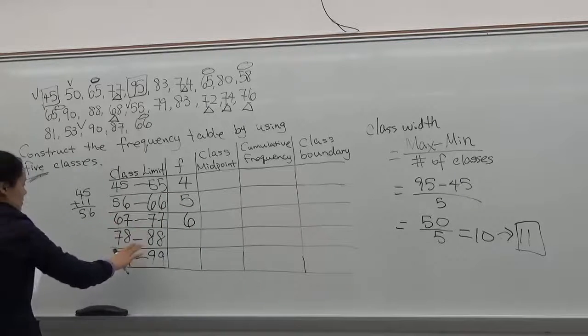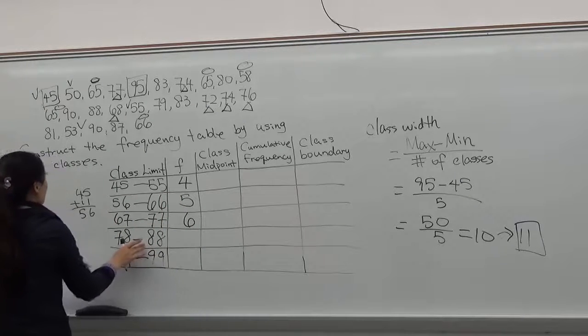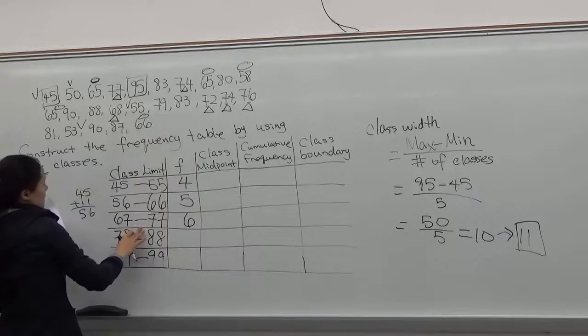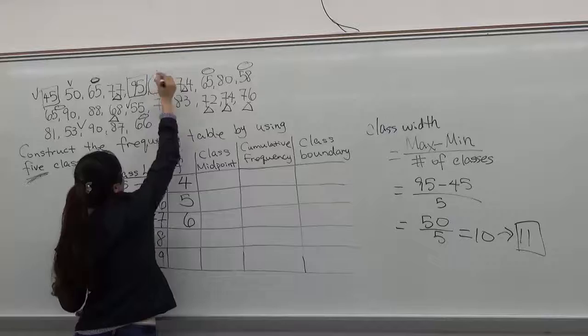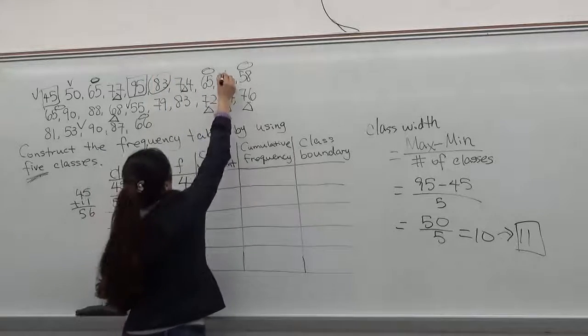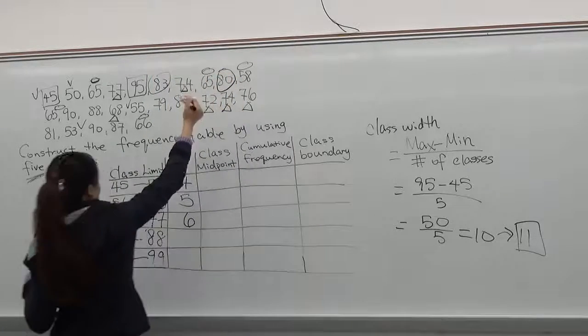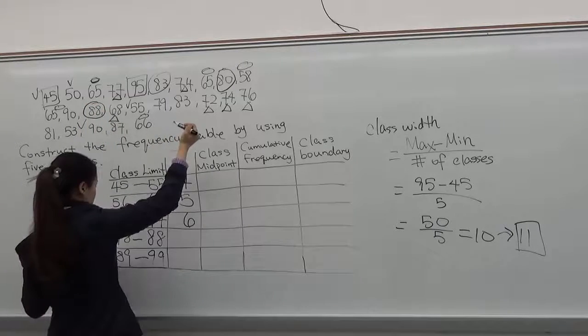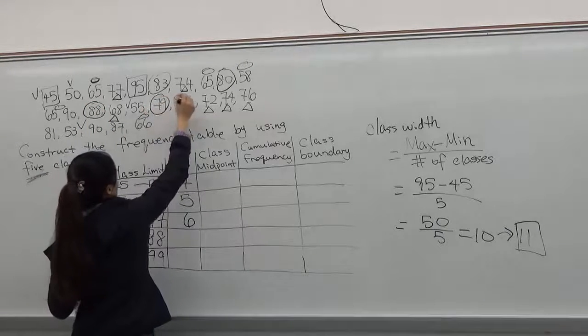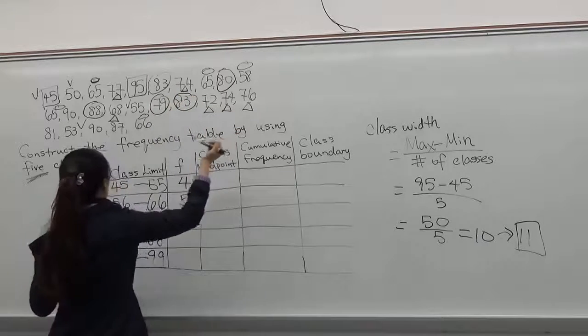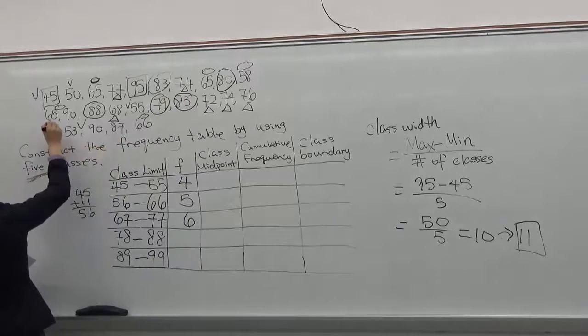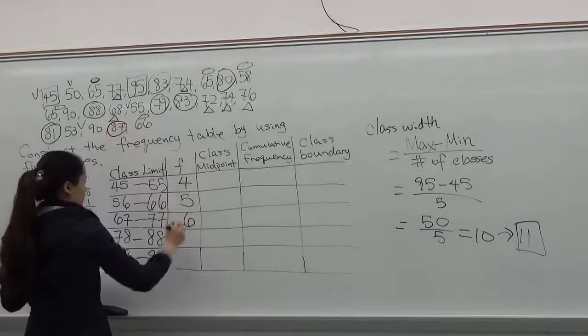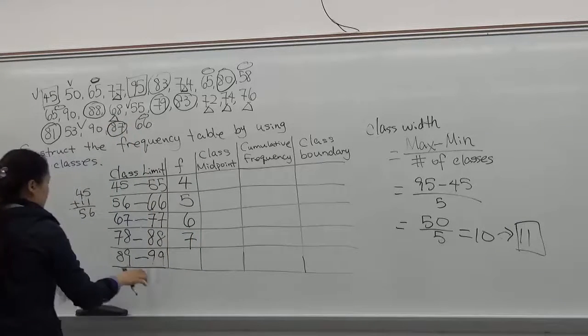Now go to the next class, 78 to 88. I'm going to circle those numbers, 78 to 88, 1, 2, 3, 4, 5, 6, and 7. Frequency 7.